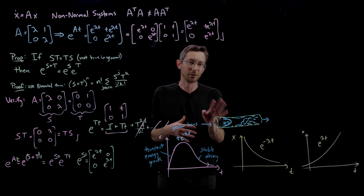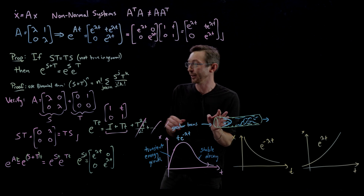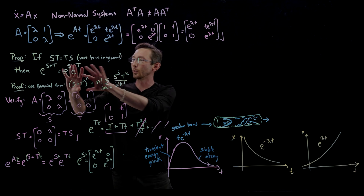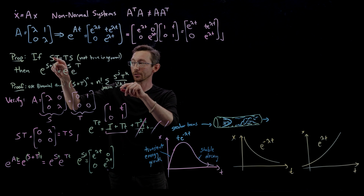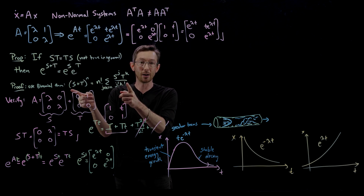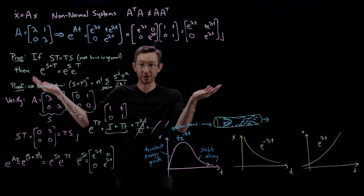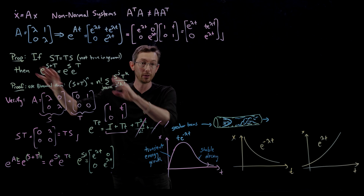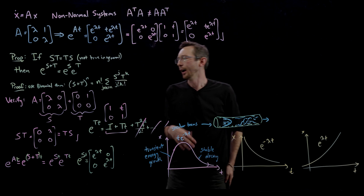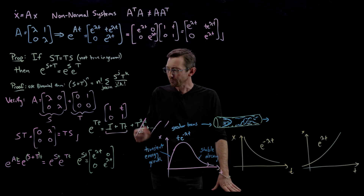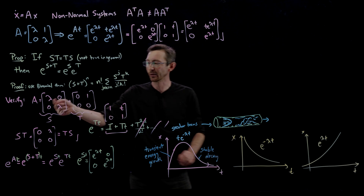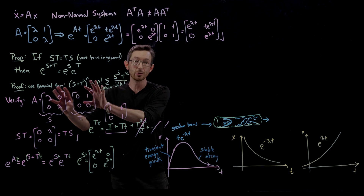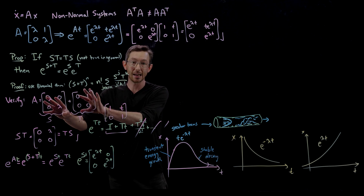This would actually be a good homework problem — you could pause the video and work out this expansion to prove that if ST=TS, then e^(S+T) = e^S·e^T using the matrix exponential series. Taking that for granted, we can break A down into the sum of S and T, where it's easy to compute e^S and e^T separately.